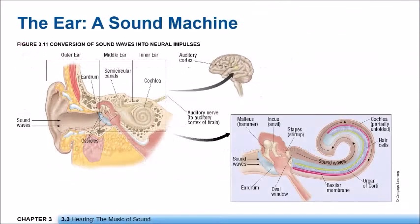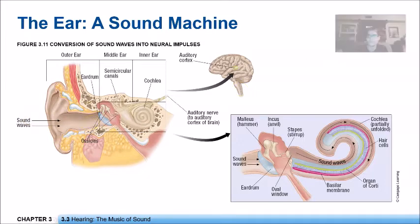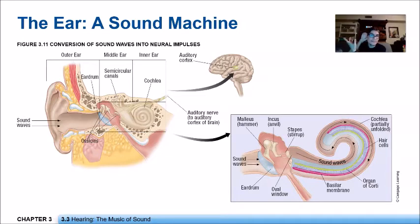Now we're going to go into hearing. With hearing — again, I'm not going to go into a huge amount of detail since this is an intro psych class — but essentially, like vision uses light waves, hearing uses sound waves. The sound waves come in through our outer ear, and all the outer ear does is act as a tunnel — it funnels in those sound waves and brings them in. This is why if you cup your hand and extend the tunnel out, you can actually hear better because it's funneling the sound waves in better. That's why somebody who wants to hear something better will cup their hand to their ear — it actually works, you're making a better tunnel.